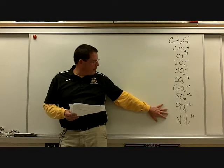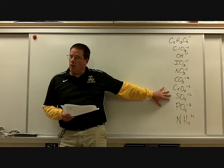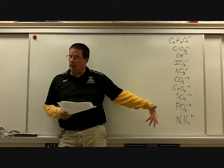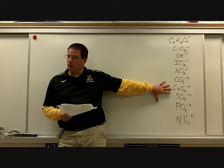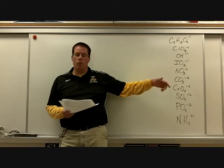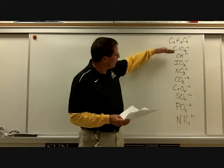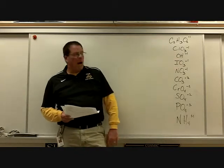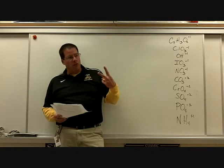Know how to name the polyatomics, and don't forget about removing one oxygen — how you drop the -ATE and add -ITE. If you drop two oxygens, it's now hypo-ite, and if you add one oxygen to any of these — except for acetate, hydroxide, and ammonium — so really only seven of them, it'll be a per-. So that was day two.